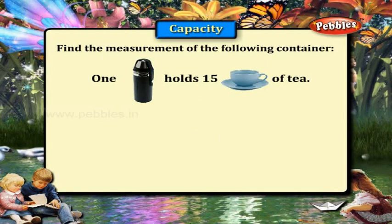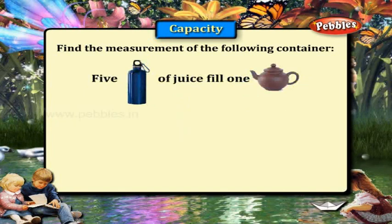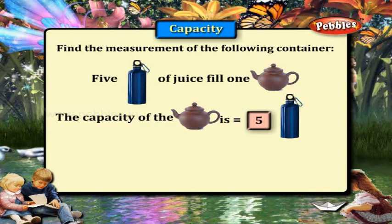One flask holds 15 cups of tea. The capacity of the flask is 15 cups. Five bottles of juice fill one pot, so the capacity of the pot is five bottles.